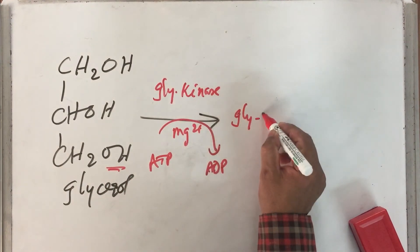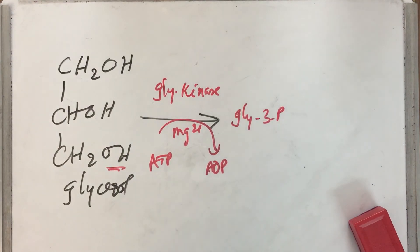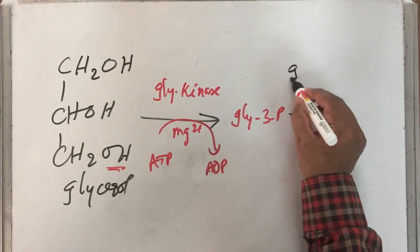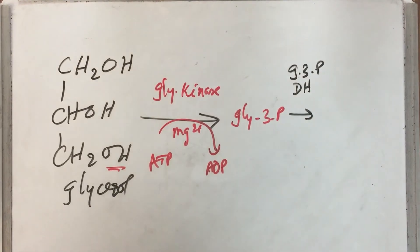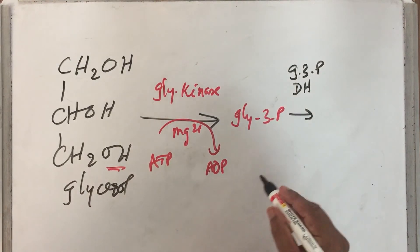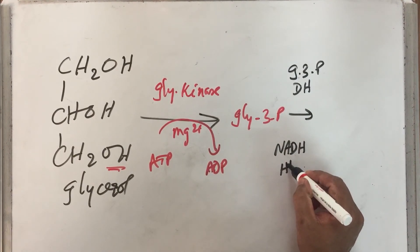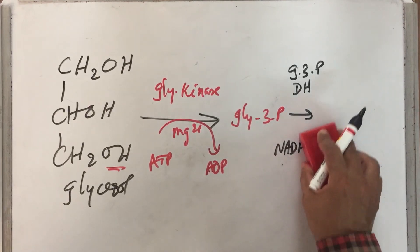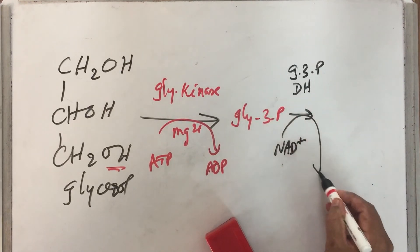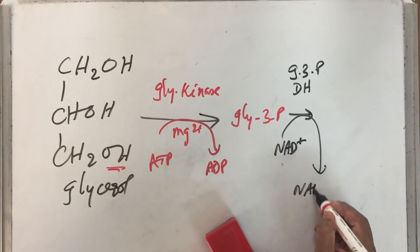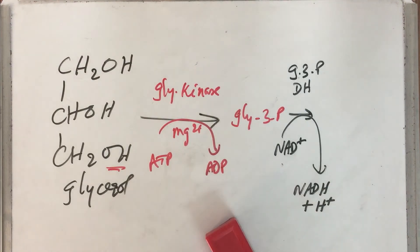Once you have glycerol 3-phosphate, the next enzyme is a dehydrogenase enzyme. So therefore that enzyme is glycerol 3-phosphate dehydrogenase. Now this dehydrogenase is an NAD+ dependent dehydrogenase which will extract 2H+, so therefore NADH + H+ - it gets reduced.